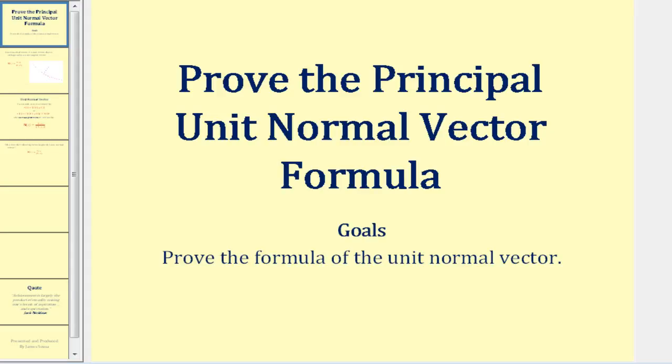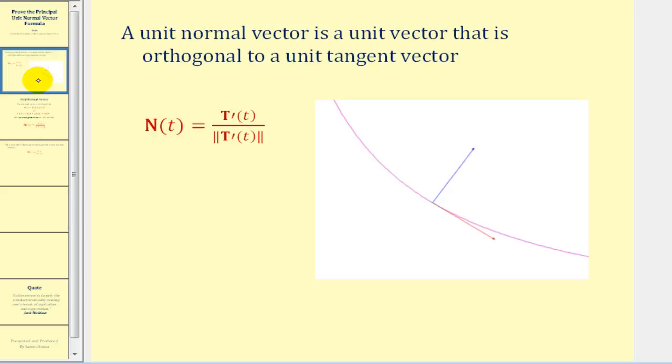Welcome to a video that will provide a rough proof of the principal unit normal vector formula. Let's start off with a quick review. If this purple curve is our space curve with orientation in this direction, the red vector would be our unit tangent vector, and the blue vector would be our unit normal vector.